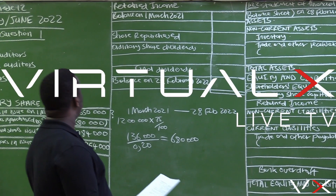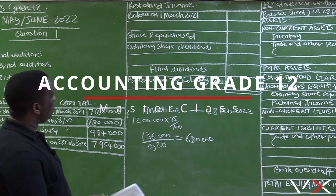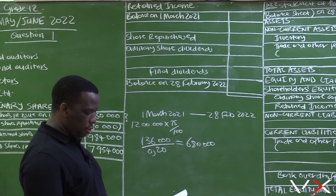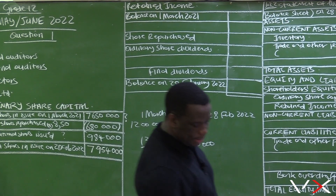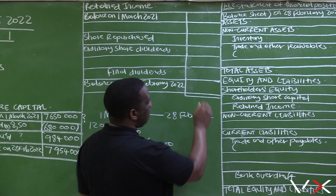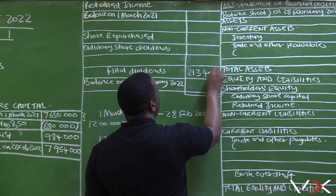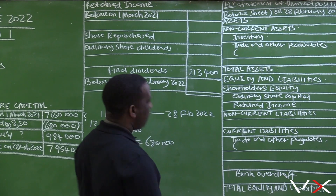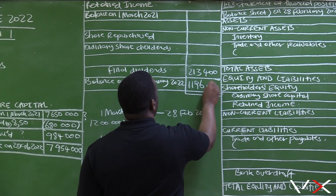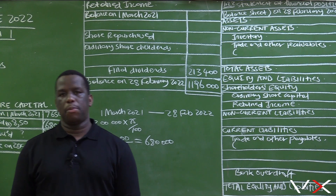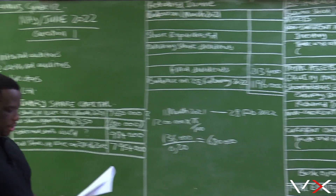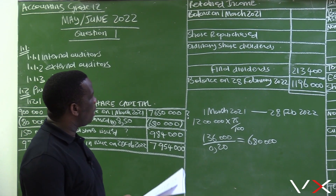We are now proceeding to the retained income notes. The balance at the beginning is not given, only the balance at the end. The final dividends and the balance at the end, according to the answer sheet, were given. Final dividends amounted to 213,400 and the final answer was 1,196,000. Now let us look at our question paper to be able to do the retained income note.